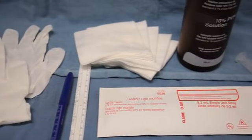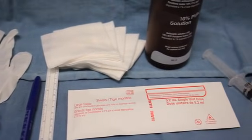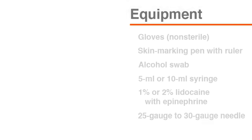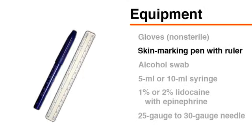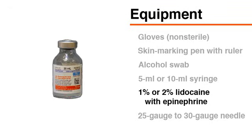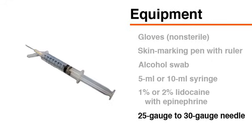To prepare to mark the skin and administer the anesthetic, assemble the following items on a non-sterile tray: non-sterile gloves, a skin marking pen with ruler, an alcohol swab, a 5 or 10 milliliter syringe, 1 or 2% lidocaine with epinephrine — typically in a concentration of 1 to 100,000 — and a 25-gauge to 30-gauge needle.